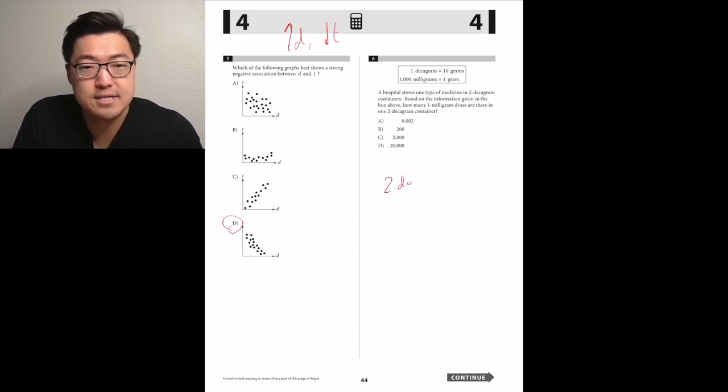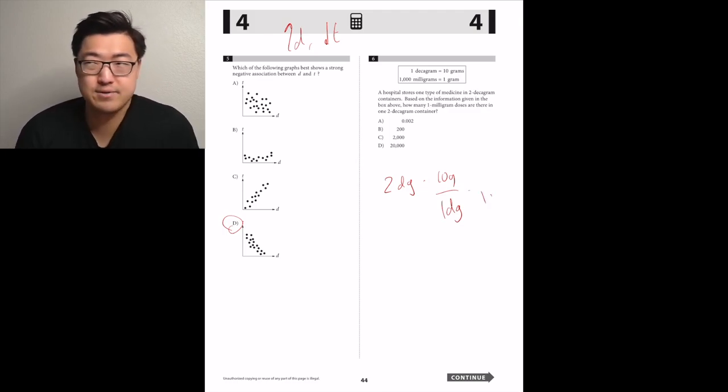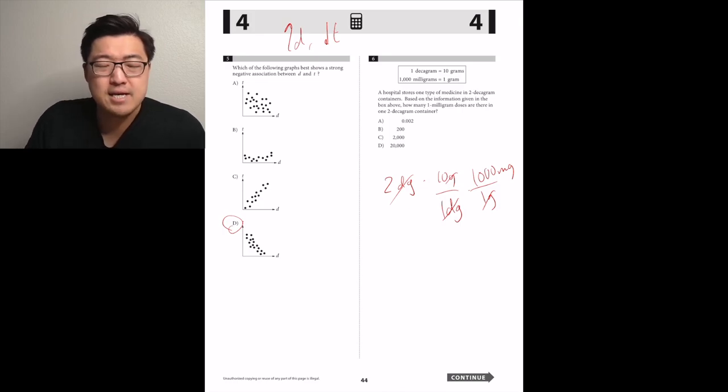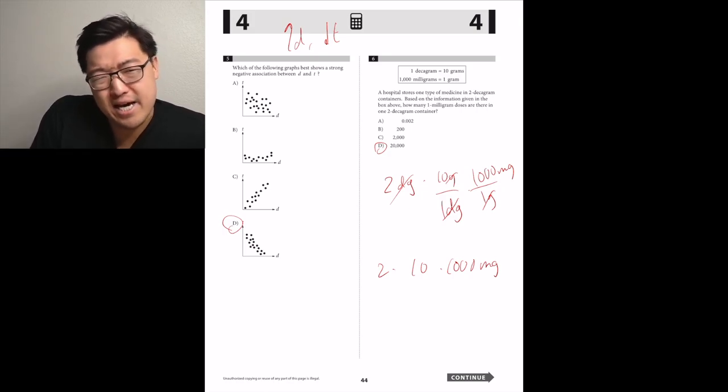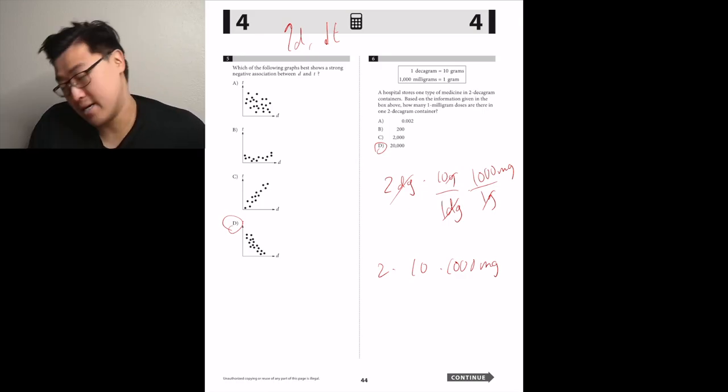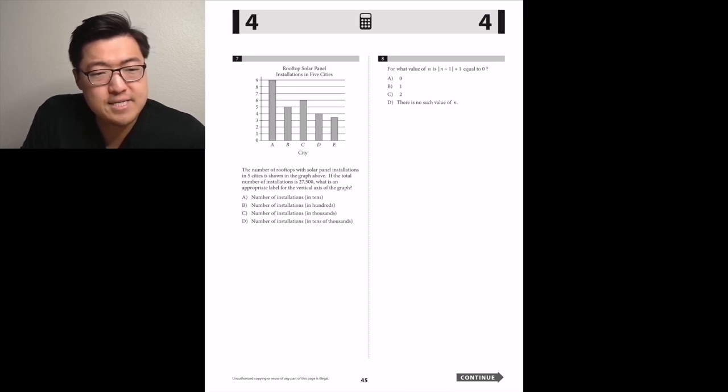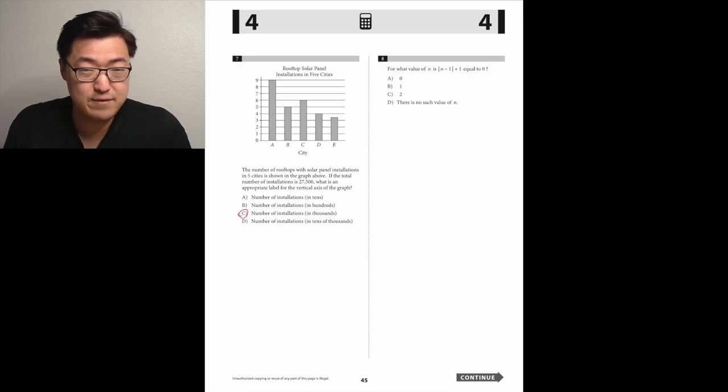Number six. A hospital stores one type of medicine in two decagram containers. Based on the information given in the box above, how many one milligram doses are there in one two decagram container? This is conversion rate. Let's make sure that we write the equation out. Do it sort of in the style of chemistry when you're trying to eliminate different units. So then we're going to want to do two decagrams, multiply that by 10 grams over one decagram with the decagram on the bottom so that it cancels. We're also going to multiply that with 1,000 milligrams over one gram. So then we're going to have to do two times 10 times 1,000, which is like D.